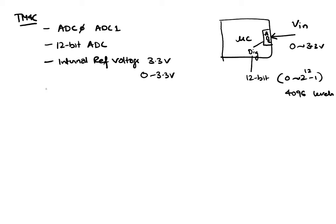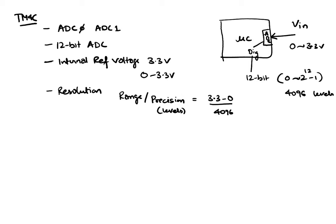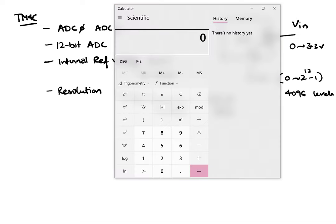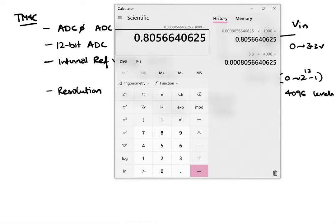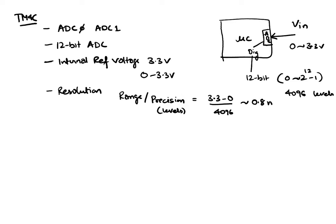So we can also say that our resolution, which is given by the formula range divided by precision — precision in terms of levels, not number of bits — for us, that's going to be 3.3 minus 0 divided by 4096. That is 3.3 divided by 4096, which is around 0.8 millivolts. So approximately 0.8 millivolts is the smallest change that our ADC can capture.